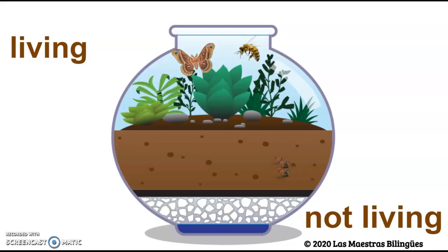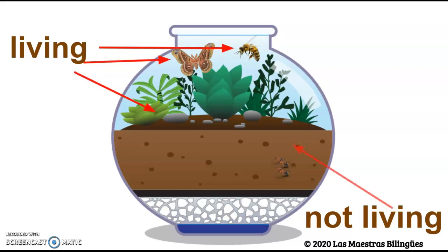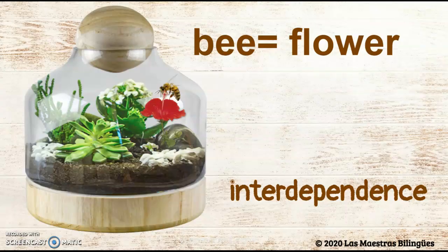Inside the terrarium, you find living and not living things. Living things just like the bee, a butterfly, and plants. Not living things like dirt and rocks. We see interdependence with a bee and a flower.